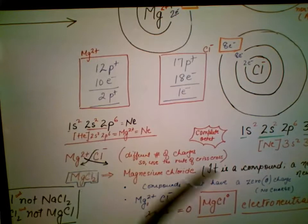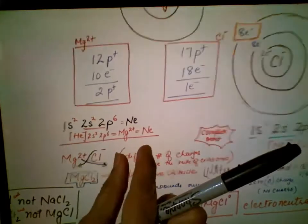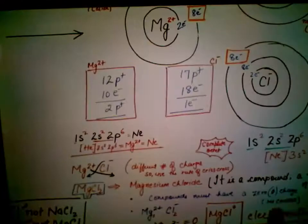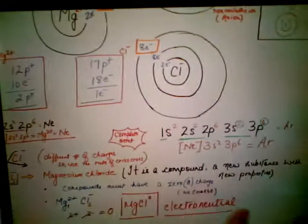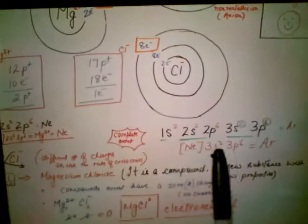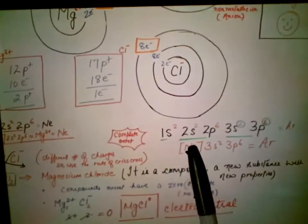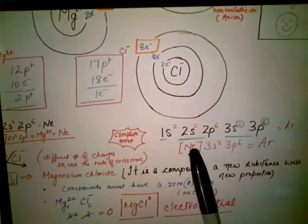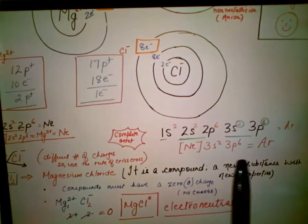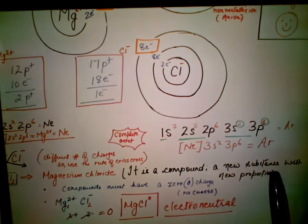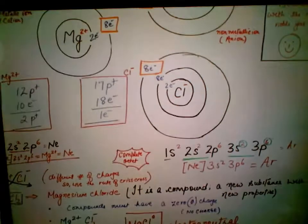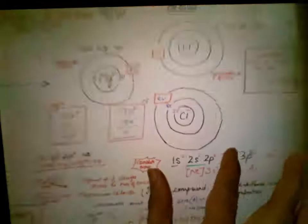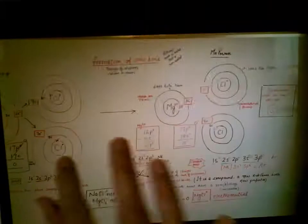The electron configuration for magnesium is 1s2 2s2 2p6 3s2. There is also a shorthand notation using noble gas cores — for example, using helium. The portion from helium through neon can be abbreviated as [Ne], and then adding 3s2 3p6 gives the configuration equivalent to argon.